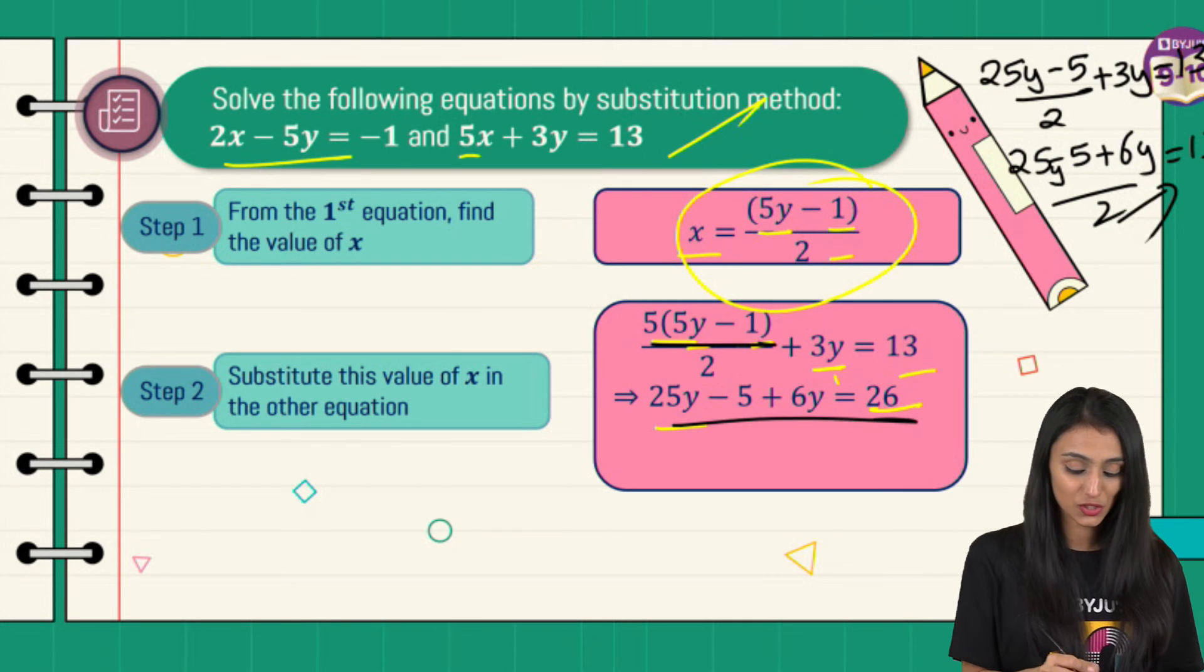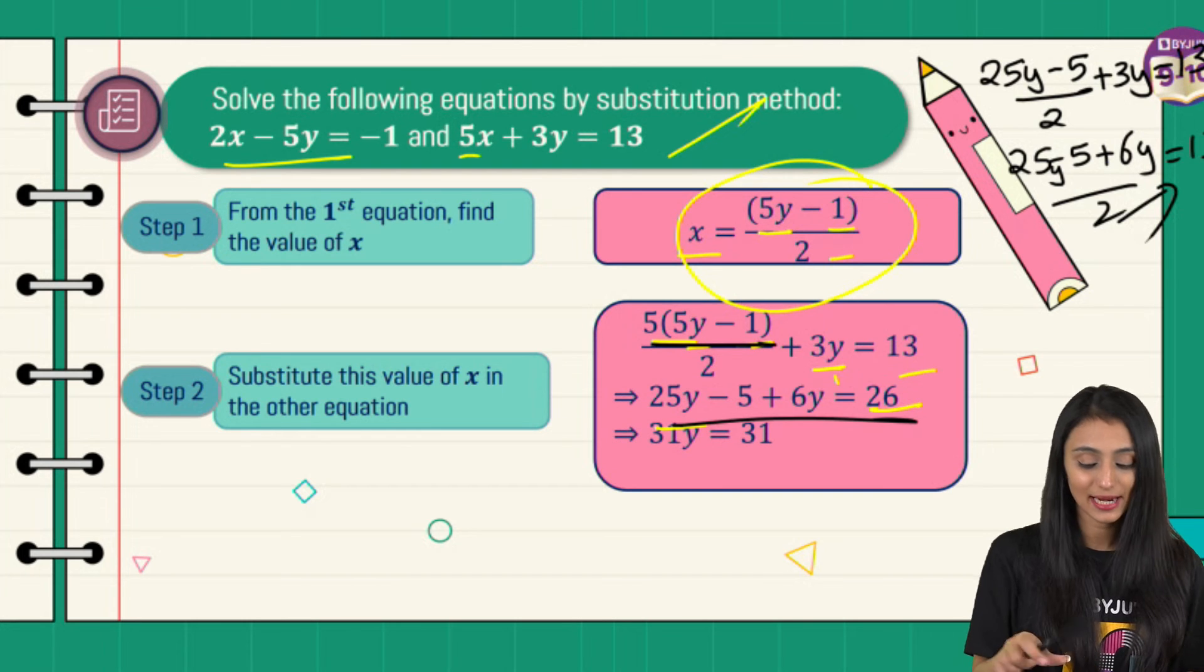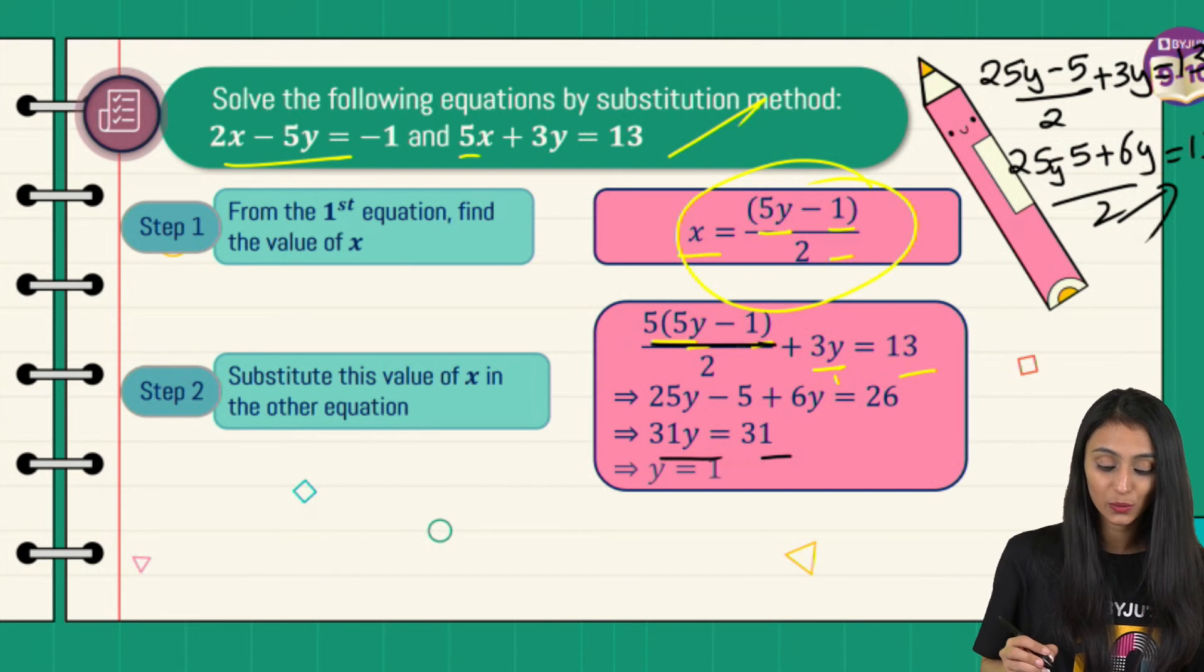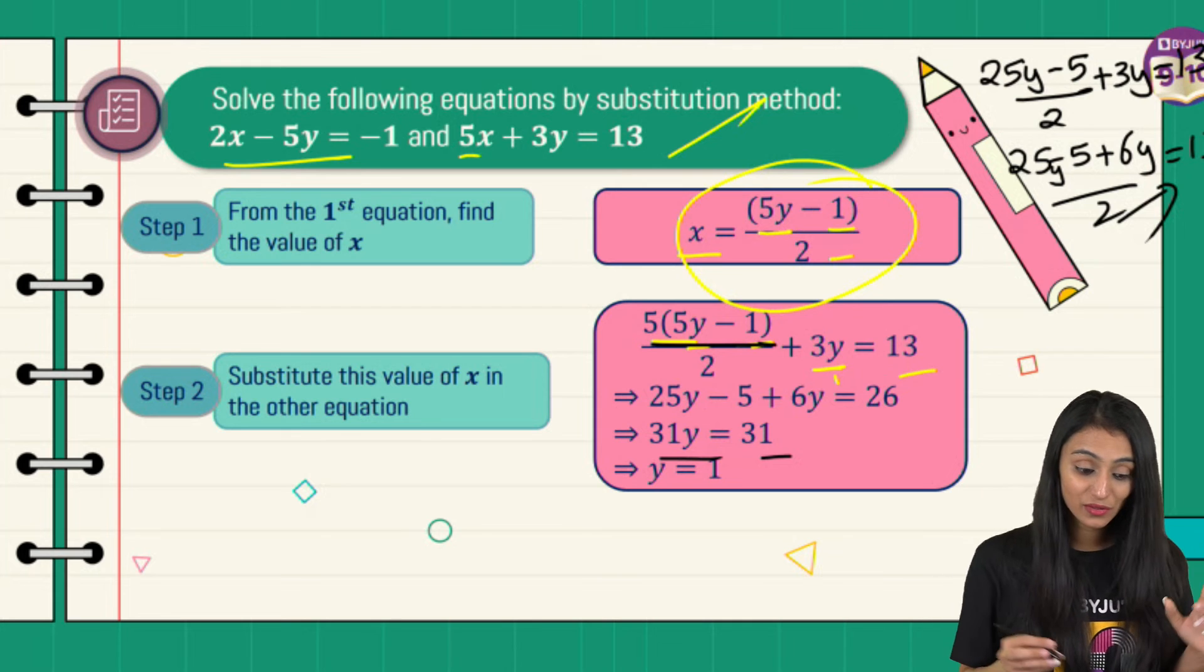Now let's keep variables on one side and constants on one side. We have 31y equals 31, so y equals 1. I have the value of one of the variables.